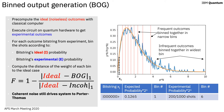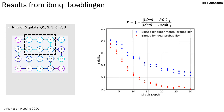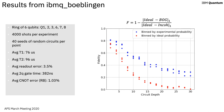Let's look at experimental data from IBM Q Boblingen. We consider a ring of 6 qubits: Q1, 2, 3, 6, 7, 8. I'm using 4,000 shots per experiment and 40 seeds of random circuits per point, averaged together. By binning our shots in two different ways, we can detect a difference in coherent and incoherent noise, as shown on this plot. This is the same data binned by the two different methods, and we can see a clear split between the two curves — a plot of fidelity versus circuit depth.